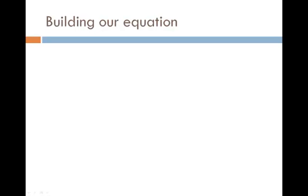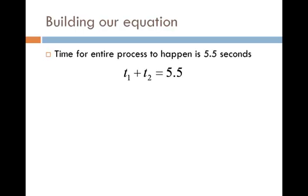Using these unknowns with some information from the problem, we can start to build a few equations along the way. One of the first things that we can build comes from the fact that the entire process for the screwdriver to fall and to go back up takes five and a half seconds. So that's really a combination of both of our times, our falling time going down and our sound time going back up. So that gives us this equation right here.